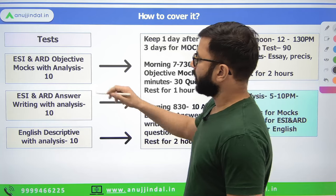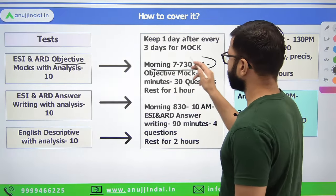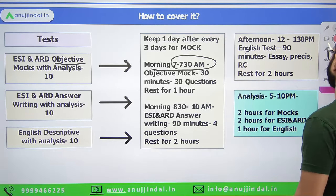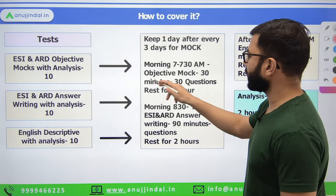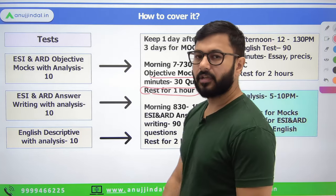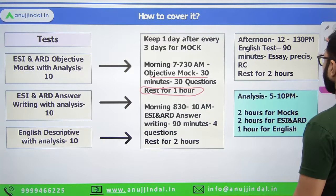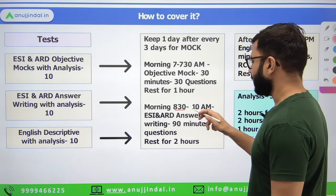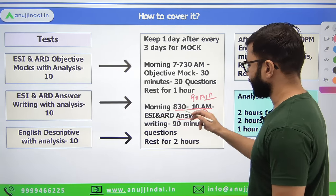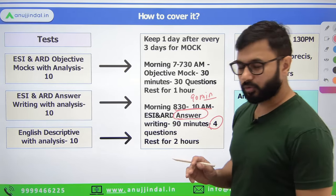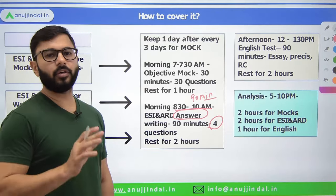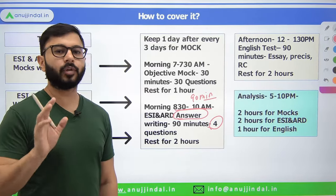Let me explain the test day structure. In the morning — say 7 to 7:30 am, or whenever suits you — take a 30-minute mock test and do 30 objective questions. Then take a good one-hour rest. After that, take a 90-minute session where you write ESI and ARD answer writing test. Pick up four questions and solve all four — assume all four are compulsory and write all four answers.